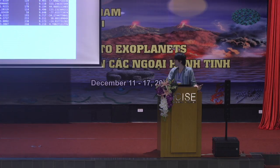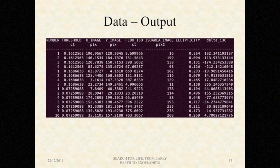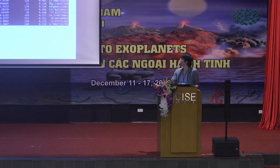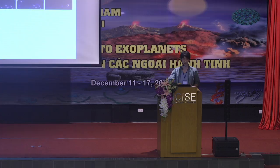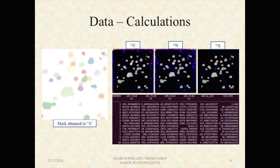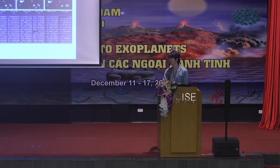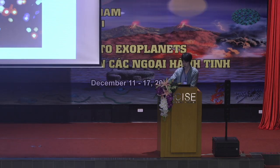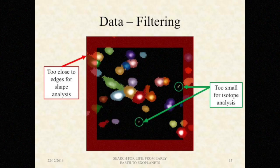Source Extractor is a tool for astronomical observation, so it outputs a table of data relating to astronomical objects — such as numbers (labels for each object), XY coordinates, flux, area, and so on. To proceed from these astronomical data to find something like a delta 13C value, we apply these ROIs to different elements of the image to do whatever calculations are needed. We filter some outputs for particular purposes — for example, inclusions too close to edges may not be suitable for shape analysis, and those which are too small may not be suitable for isotope analysis.